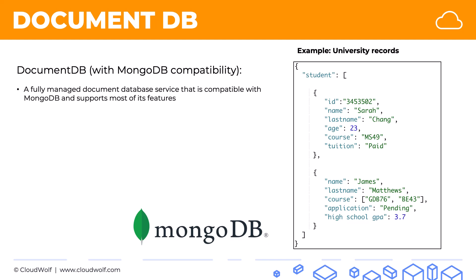It stores these kinds of documents — they're JSON documents. Let's bring the mouse over. Here we've got a student in this document. We've got a record of students which is an array. These square brackets define an array and inside we've got two elements: element 1 and element 2. Of course, normally there would be more elements.